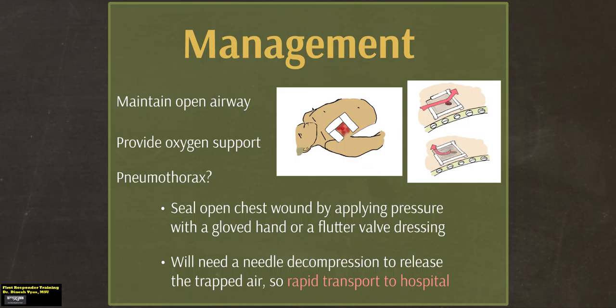The management of these chest injuries includes maintaining an open airway and providing oxygen support. You must also consider whether there is a pneumothorax present. In this case, you would seal the open chest wound by applying pressure with a gloved hand or a flutter valve dressing, as shown here. The flutter valve dressing essentially allows air to escape but does not allow air to come into the lung, which prevents a tension pneumothorax from occurring and would place the patient at great risk.